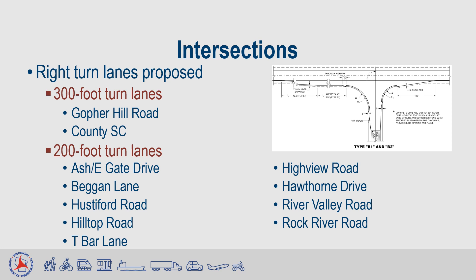Another issue brought up at the public involvement meeting was the lack of turn lanes along Wisconsin 16 throughout the two-lane section of roadway. Based on a review of the traffic volumes along Wisconsin 16 and on the side roads, right-turn lanes will be installed at all the intersections within the pavement replacement project. Full-length turn lanes measuring 300 feet are proposed at Gopher Hill Road and County SC, and 200-foot full-width turn lanes are proposed at the other intersections within the corridor as listed on the slide.